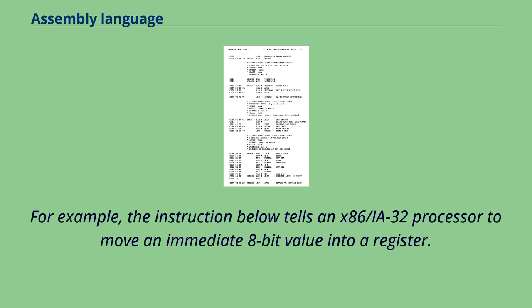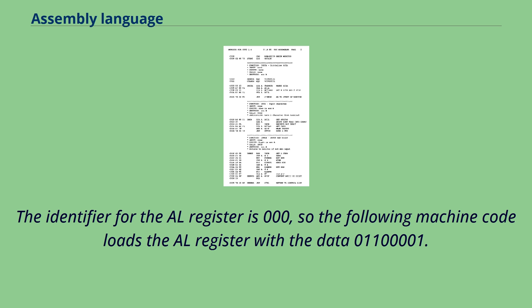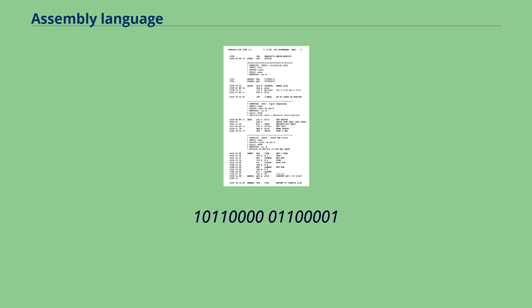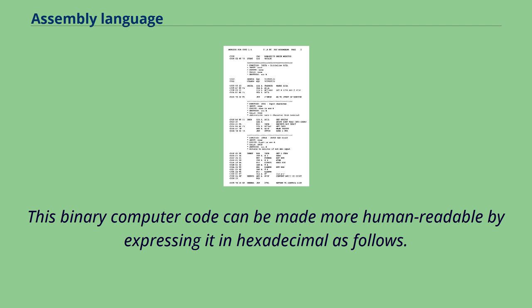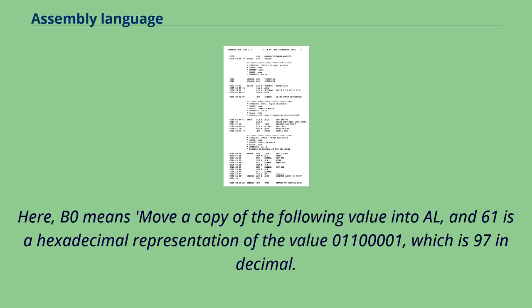For example, the instruction below tells an x86/IA-32 processor to move an immediate 8-bit value into a register. The binary code for this instruction is 10110 followed by a 3-bit identifier for which register to use. The identifier for the AL register is 000, so the following machine code loads the AL register with the data 01100001: 10110000 01100001. This binary computer code can be made more human readable by expressing it in hexadecimal as B061, where B0 means move a copy of the following value into AL, and 61 is a hexadecimal representation of the value 01100001, which is 97 in decimal.